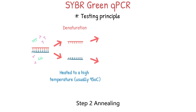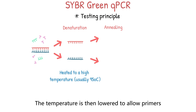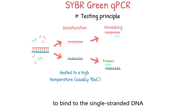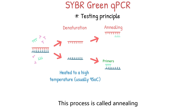Step two is annealing. The temperature is then lowered to allow primers, which are short DNA sequences complementary to the target sequence, to bind to the single-stranded DNA, or ssDNA template, at specific regions. This process is called annealing.